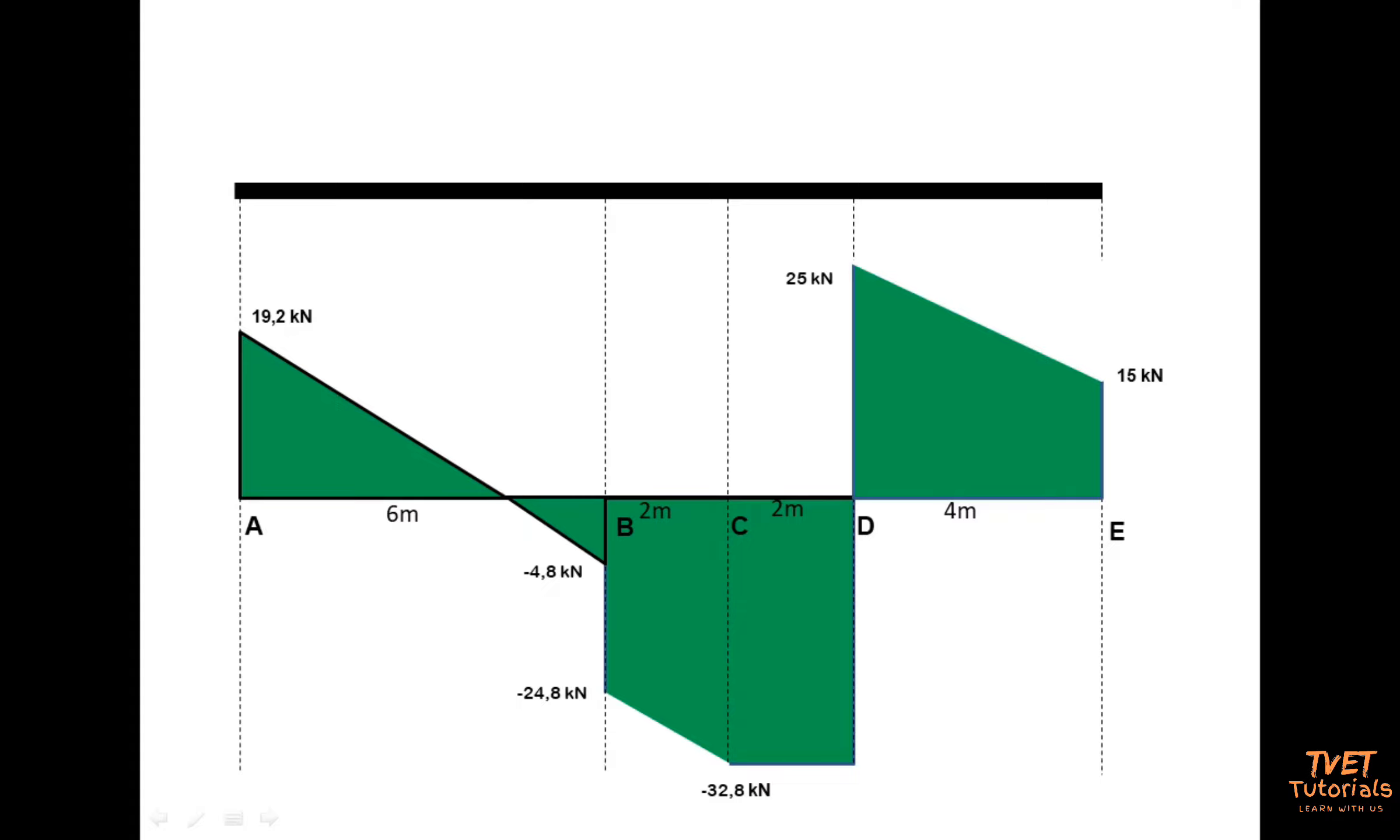The shear force diagram or the beam is A, B, C, D, E. So there are five important points on the shear force diagram or on the beam that I must take note of. Every time I'll be using these points to ask what was happening at that specific point. The points are very important.